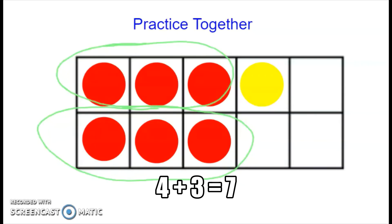When we have similar numbers like that, three and three, we call those doubles. And then we have a remaining extra circle or dot out here.